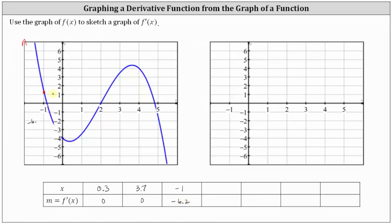Now let's sketch the tangent line at x equals two, which should be this point here. From the point of tangency, if we go up four units and right approximately one unit, we find another point on the tangent line. The slope of the tangent line is four at x equals two, so we know the derivative function value is positive four.